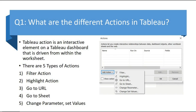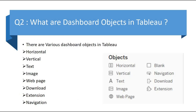The first question is: what are the different actions in Tableau? An action is an interactive element on the Tableau dashboard that is driven from within the worksheet. There are five types of actions: filter actions, highlight action, go to URL, go to sheet, change parameter, and change sets value.